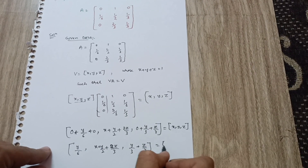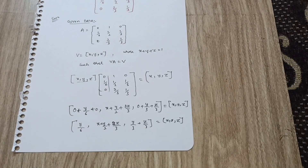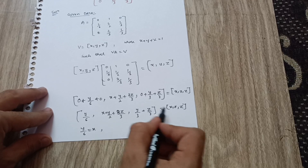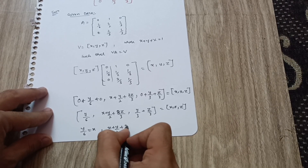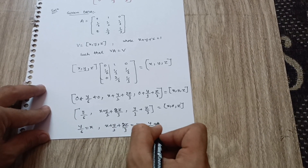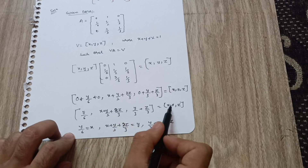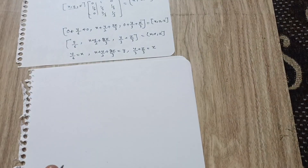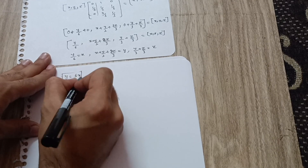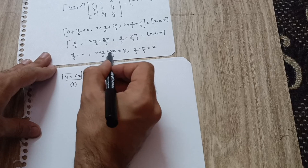This multiplication result equals (x, y, z). Since these two matrices are equal, we compare left-hand side with right-hand side term by term. So: y/6 = x, giving us y = 6x — call this Equation 1. The second terms: x + y/2 + 2z/3 = y. The third terms: y/3 + z/3 = z.